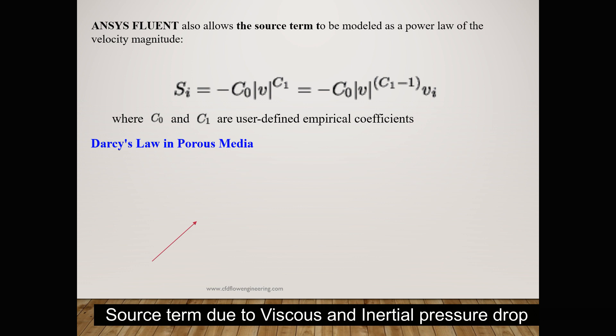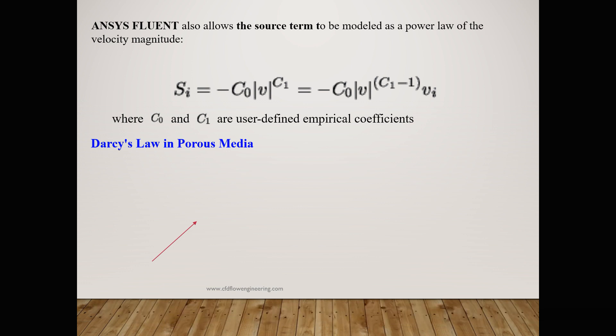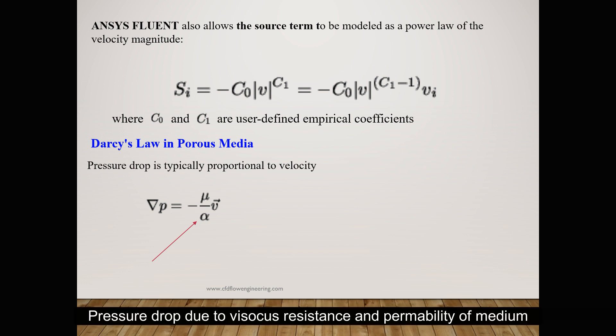The pressure drop due to viscosity is calculated such that pressure drop is proportional to the velocity and the constant is a ratio of viscosity to the permeability of porous medium. By integrating this equation, we can find out pressure drop in each direction: x, y, z direction.